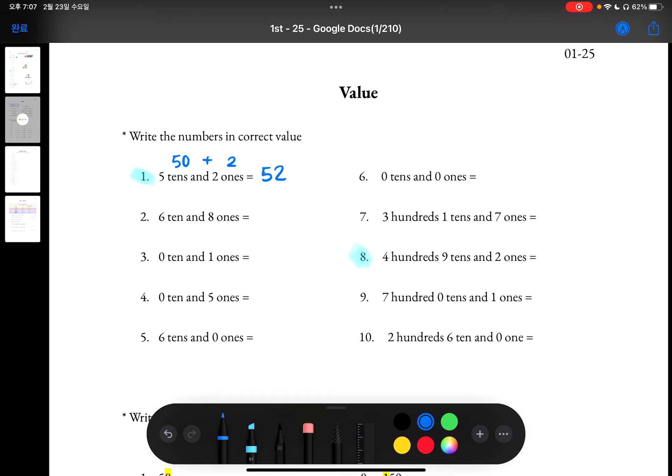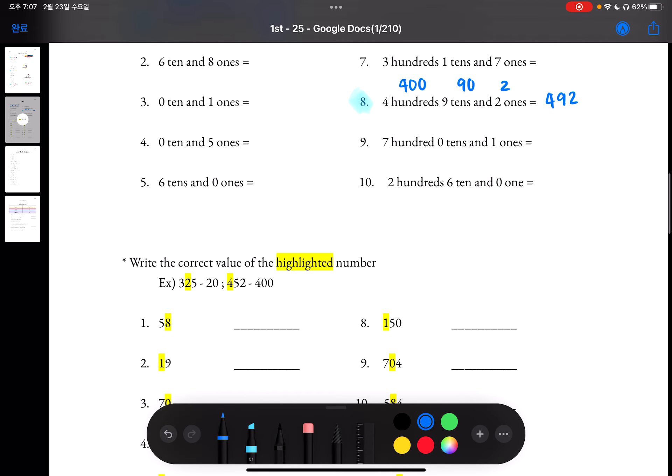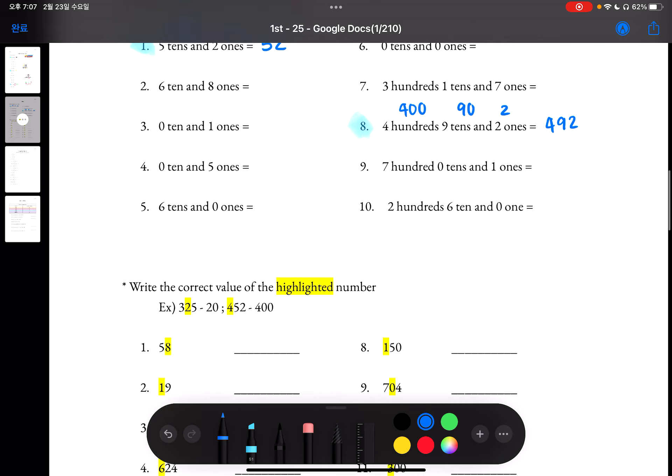For number 8, now we have hundreds as well. But that doesn't really change anything because it would just be 492. So that's what it says. That's what you can do for numbers 1 through 10.